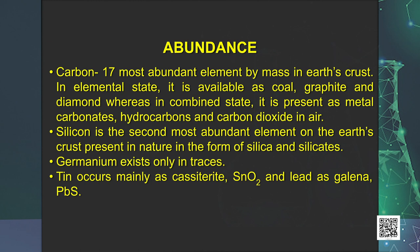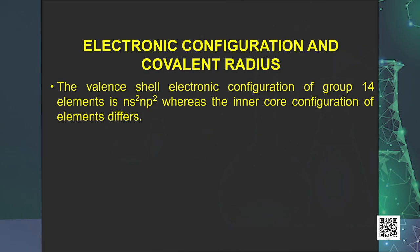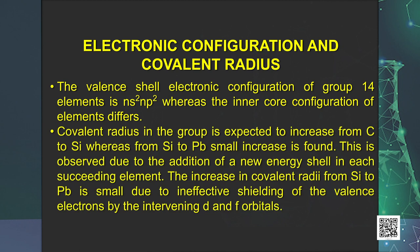Flerovium is a synthetically prepared radioactive element. The valence shell electronic configuration of group 14 elements is ns²np², whereas the inner core configuration of elements differs. Covalent radius in the group is expected to increase from carbon to silicon, whereas from silicon to lead only small increases are found.